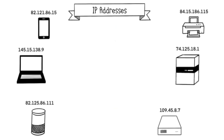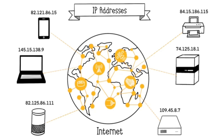An IP address is a unique number that identifies each machine connected to the Internet, whether it's a router, printer, smartphone, web server, or any connected device. The series of numbers you see above each machine is their IP address. These IP addresses allow different machines connected to the Internet to communicate with each other, much like phone numbers for us. When you want to communicate with someone, you do it through their phone number, which is unique.